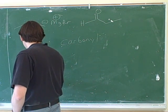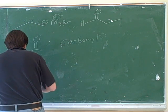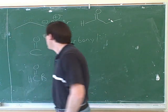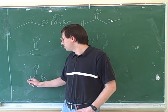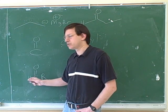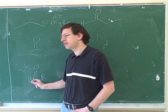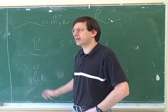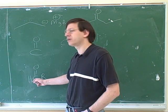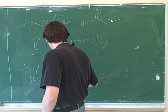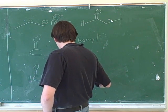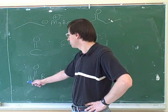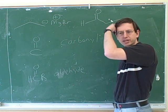For example, you might have a carbonyl bonded to a hydrogen and a carbon chain. You might have guessed 'carbonyl acid,' but this is actually called an aldehyde. An aldehyde means one carbon chain and one hydrogen are attached to the carbonyl carbon.